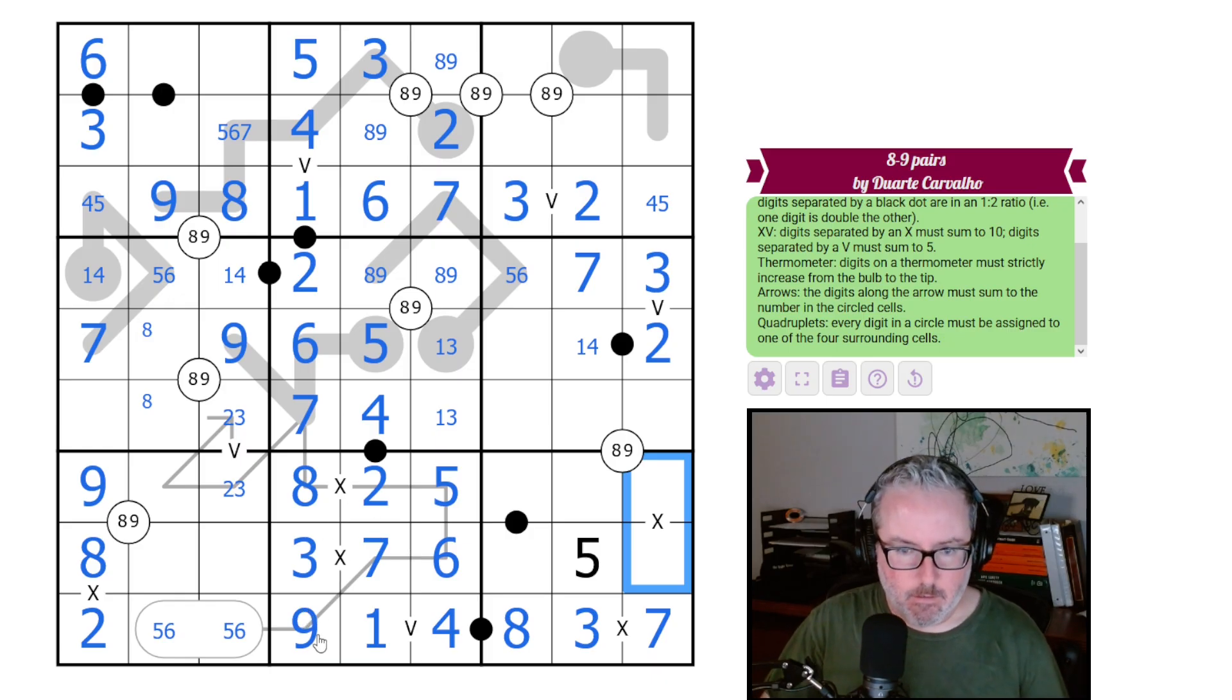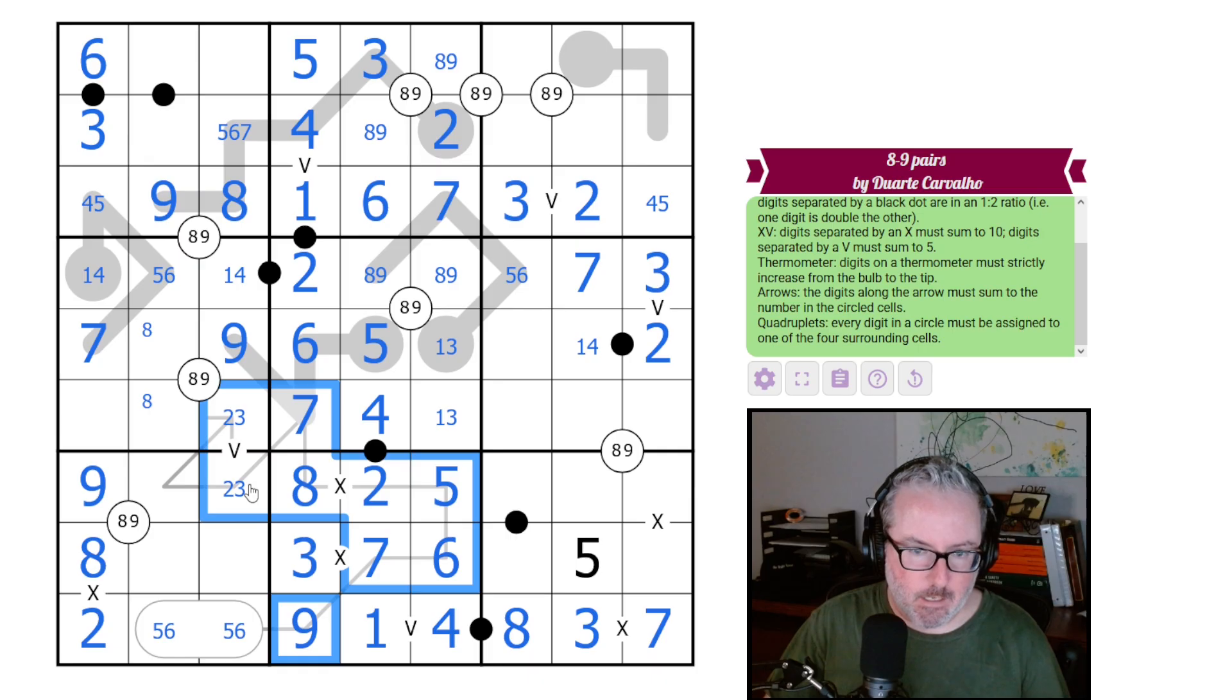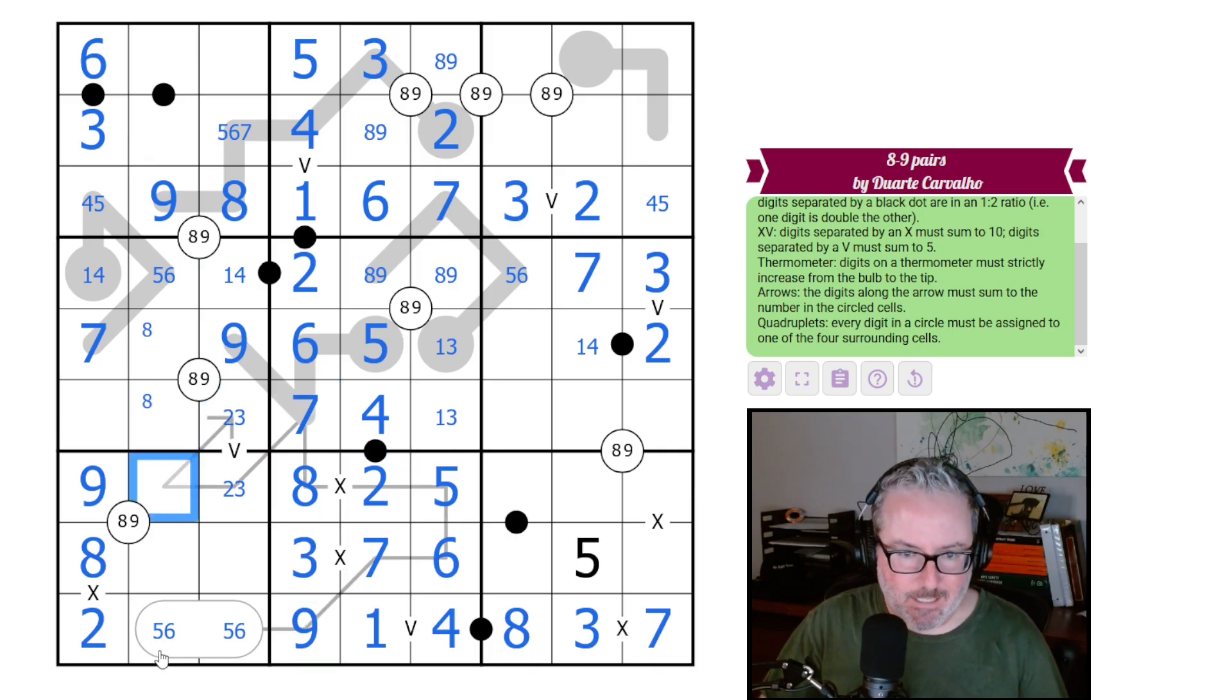All right. Where do we now have something to work with? We should start adding. Maybe we should start adding. All right. Nine, eight, seven, six, and five is 35, 37, 44 plus five is 49, so this is 56, and this had to be a seven to make the math work. Good.